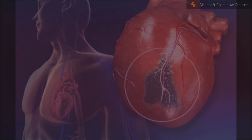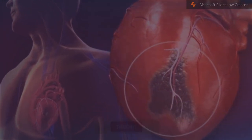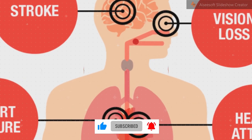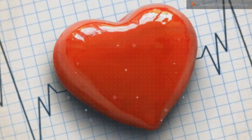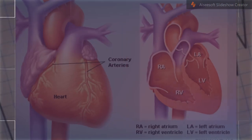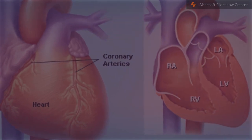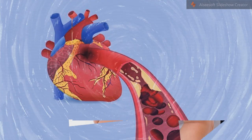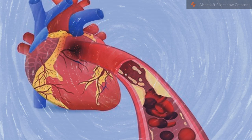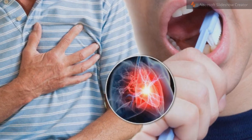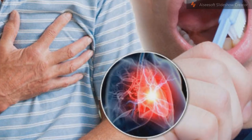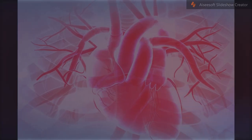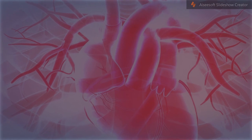Medication: Statins — drugs that act to lower blood cholesterol — decrease the incidence and mortality rates of myocardial infarctions and are often recommended in those at an elevated risk of cardiovascular diseases. Aspirin has been studied extensively in people considered at increased risk of myocardial infarction, and based on numerous studies, there does not appear to be a benefit strong enough to outweigh the risk of excessive bleeding. Nevertheless, many clinical practice guidelines continue to recommend aspirin for primary prevention.